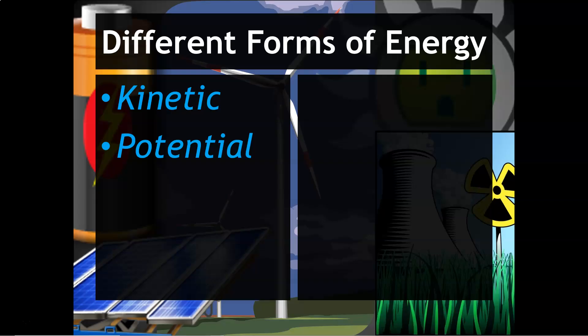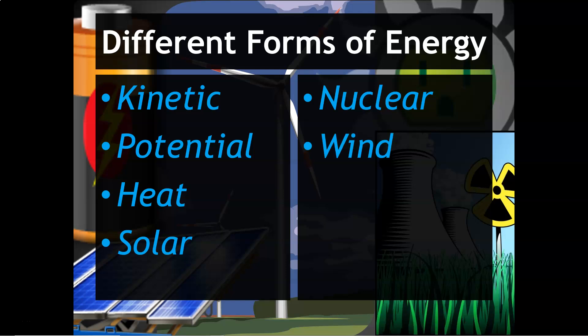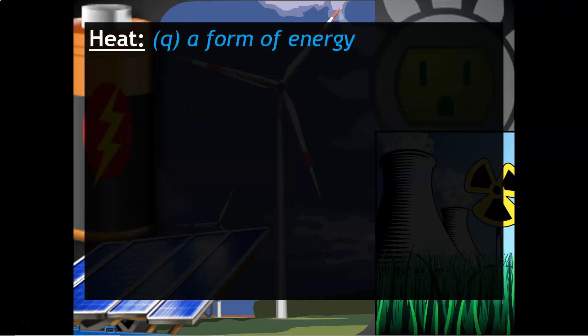There are many different kinds of energy. Kinetic and potential is probably what you're most familiar with, but you can also break them down into further subcategories like heat or solar, nuclear, wind, sound, even magnetic. Heat is usually associated with the symbol q. This is a form of energy.